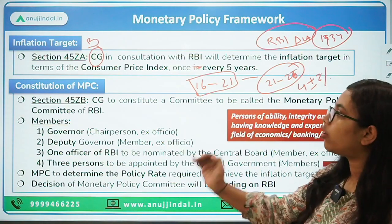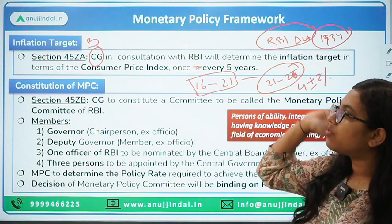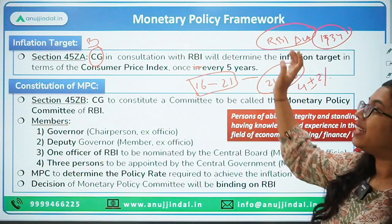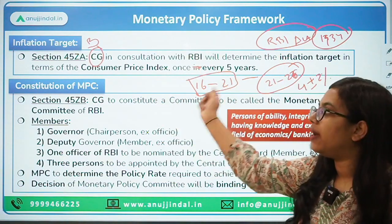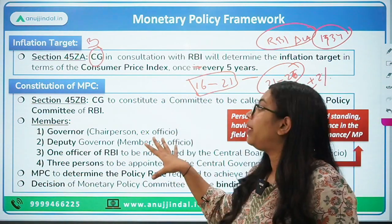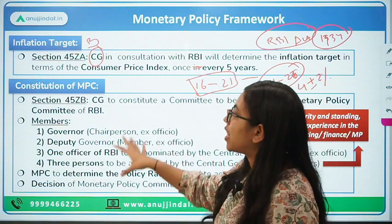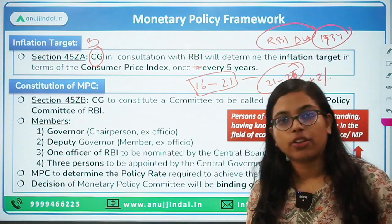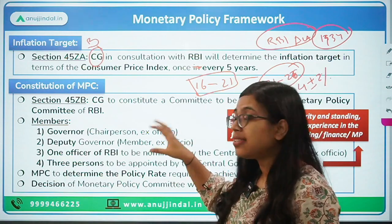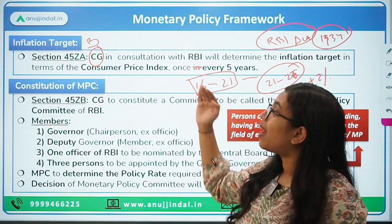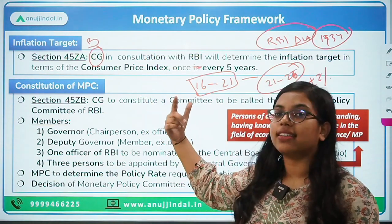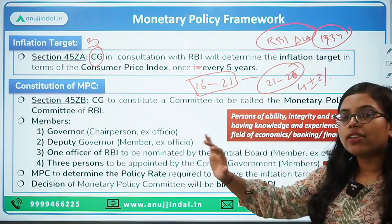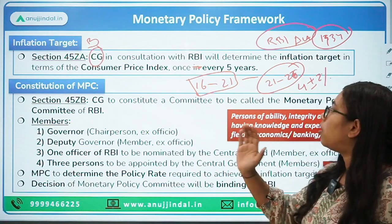Section 45ZB talks about the constitution of the Monetary Policy Committee, and this is very important for your exam — direct questions can be asked on this. The MPC is constituted by the central government. The chairperson, ex officio by default, is the governor. Then there is another ex-officio member who is the deputy governor. Apart from that, one officer of RBI is nominated by the central board of RBI.